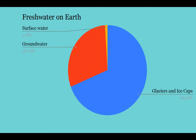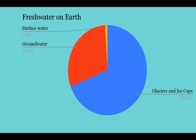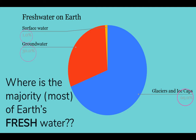Now let's break it down even more. This next chart is different from the last one — it only shows the fresh water on earth, which again is just 3% of all water. Of that fresh water: 69% exists in glaciers and ice caps, 30% is groundwater located in the ground, and only 1% is surface fresh water.